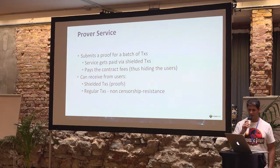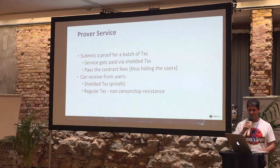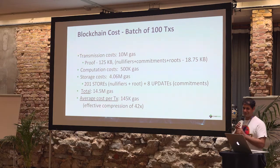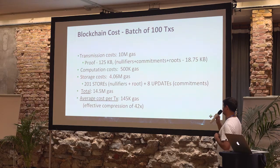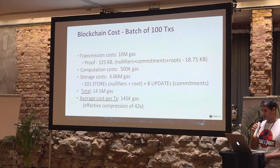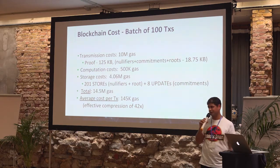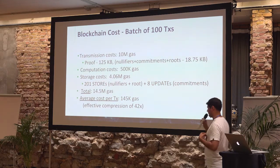It gives very strong compression of the cost. When talking about 100 shielded transactions, the proof size grows slightly to 125 kilobytes. We also have the linear component of transmitting nullifiers, commitments, and roots. Computation cost of running the verifier stays almost the same at 500,000 gas. We still have linear cost in storage mainly because we want to store all the nullifiers we are getting. In total it will be 14.5 million gas, and the average cost per transaction is 145,000 gas — which is an effective compression of 42.